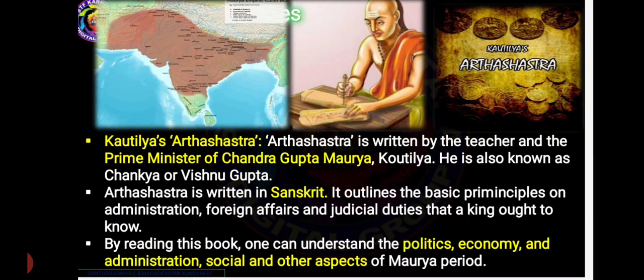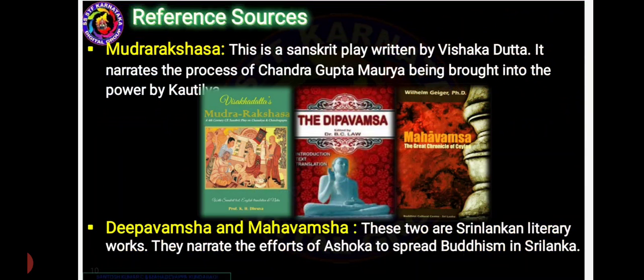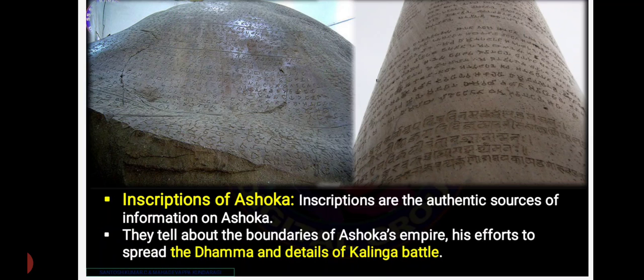The Arthashastra also helps us to know the special economical, social, political and administrative works of the Mauryan Empire. Visakadatta wrote Mudrarakshasa, a Sanskrit play, which tells us how Chandragupta came to power. Deepavamsa and Mahavamsa are Sri Lankan works that tell us how Buddhism spread in Sri Lanka by Ashoka. There are also inscriptions of Ashoka which tell us the boundaries of his empire, his efforts to spread the Dhamma, and details of the Kalinga battle.